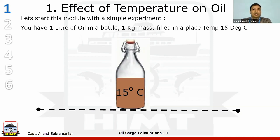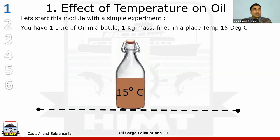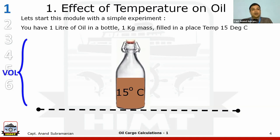We look at the effect of temperature on oil. Before we start, let us do a simple example — with this example, the whole fundamentals will be clear as to why we do all these calculations. Let us start with a simple one litre of oil in a bottle. The mass of that oil is one kg, filled at an ambient temperature of 15 degrees Celsius. We keep this as our reference and start the experiment.